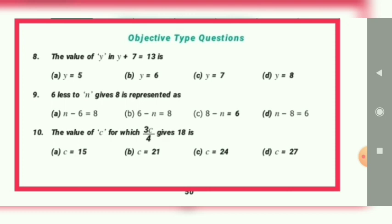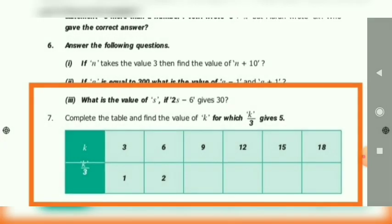So 3 into 6 equals 18. What is the answer? Option c. Homework: Exercise 2.2, question number 7. You have to find the value of k by k. The equation is k by 3 gives 5.